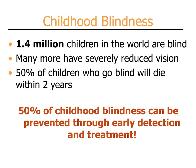Childhood blindness specifically is also a significant problem. While frequently not thought of as affecting children, blindness occurs in 1.4 million children in the world. Many more have significantly reduced vision. Not only does this affect their vision, but it also affects their lifespan. Fifty percent of children who go blind will die within two years.